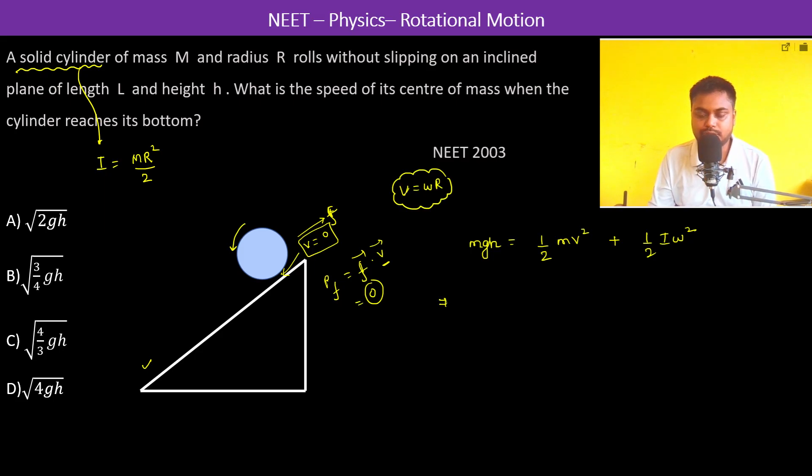Therefore, now let us write this. So, this is mgh is equal to half mv square plus half into i. i is m r square by 2 into omega which is v square by r square.